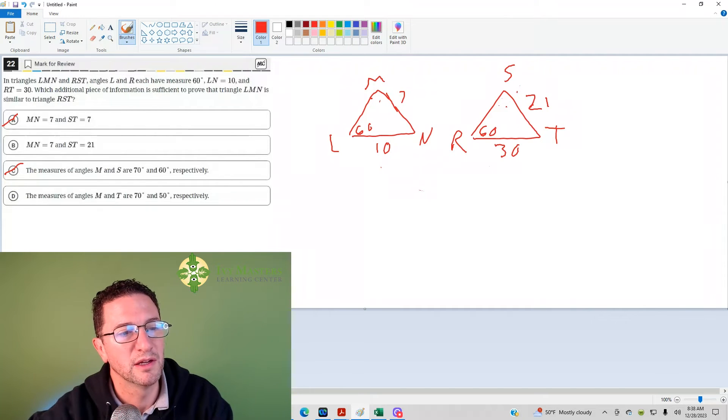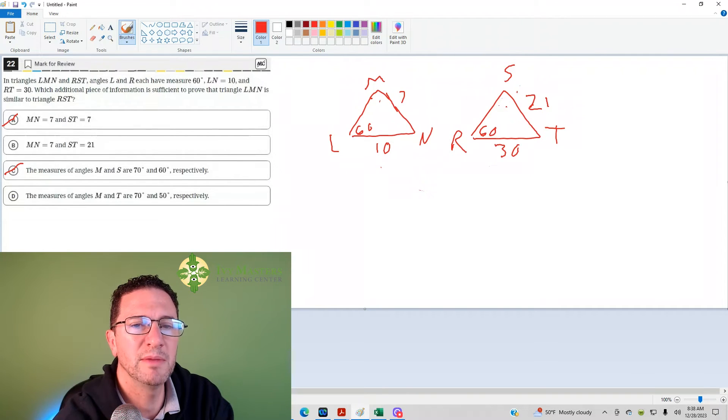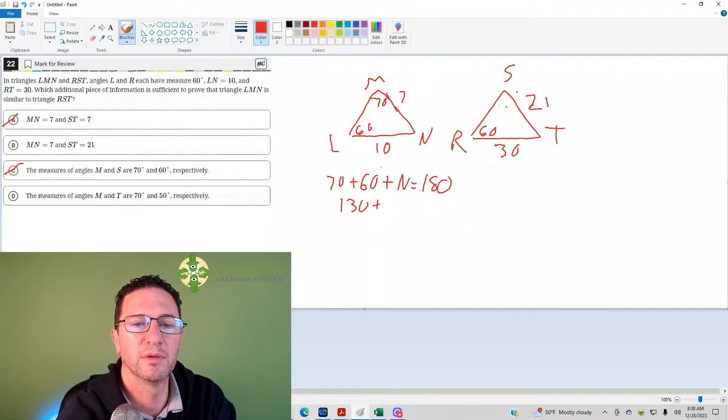Answer choice D: Measures of angles M and T are 70 and 50 degrees, respectively. Now, on the face of things, this might seem like we're saying two things are different. But check this out. If M is 70, and we add that 70 and 60, you know it has to be 180 degrees total. Then you get 130 plus N equals 180. So your N equals 50. So this is 50.